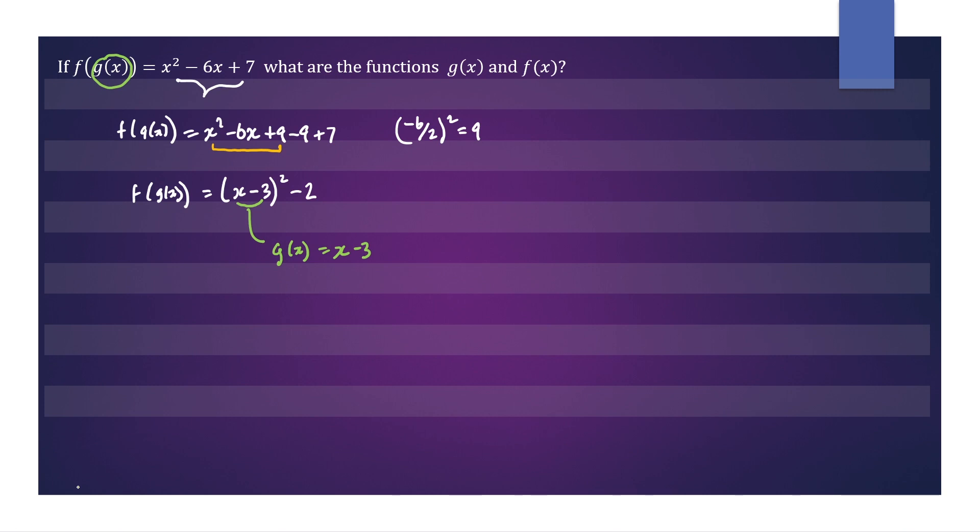Our outer function is f. So we write that as f(x) equals this expression squared. So we'll write x for that space squared minus 2.